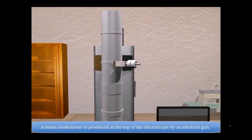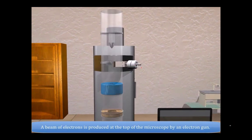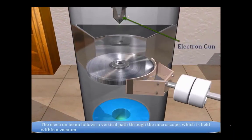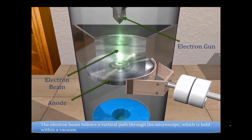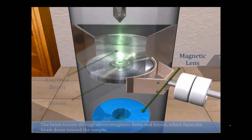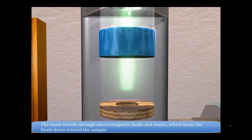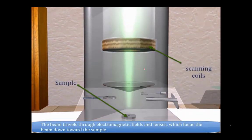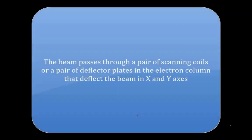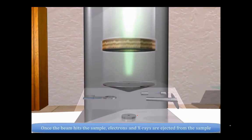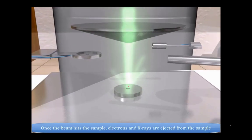In the scanning electron microscope, the cathode gun or electron gun produces electrons that fall onto the sample. This electron beam passes through the magnetic lens, condenser lens, deflection lens, and scanning coils, and then through the objective lens finally onto the sample. The beam passes through a pair of scanning coils and detectors in the electron column, passing through the objective lens to reach the sample.